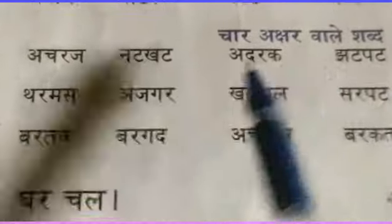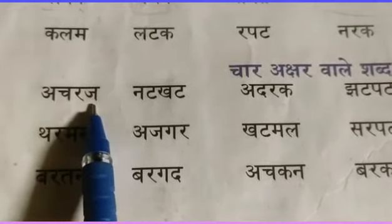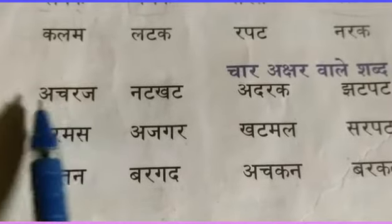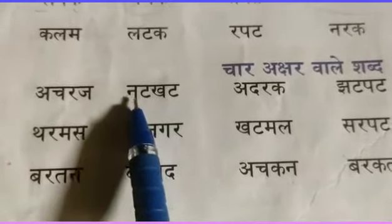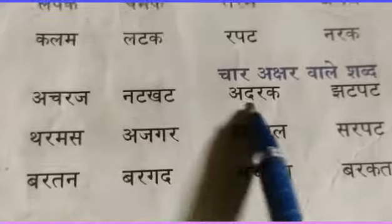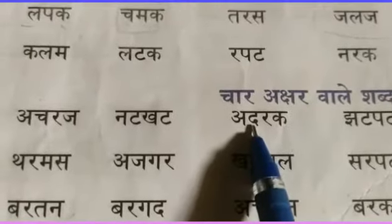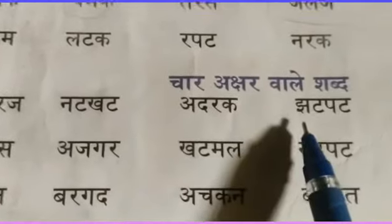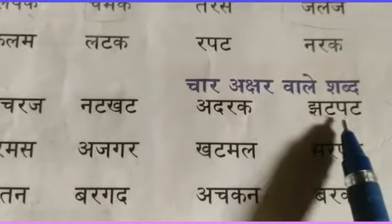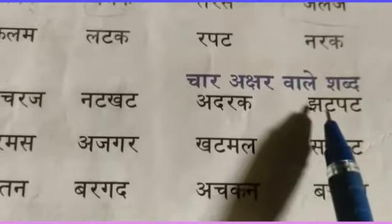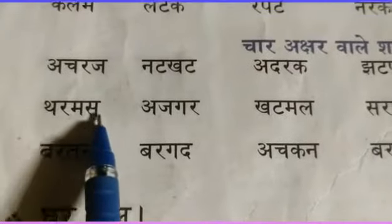Char aksharwale sabda. Aksharaj: J, T, P, T, Z, J. T, P, T, Z. Th, R, M, A, S — Termes.